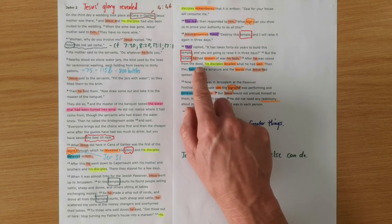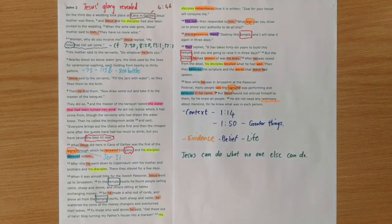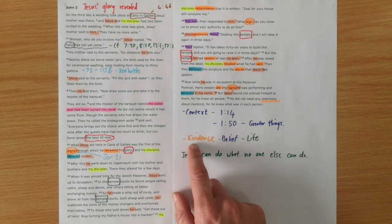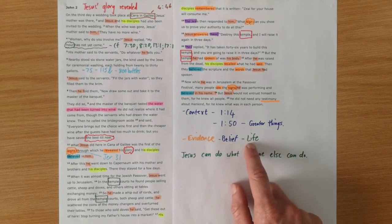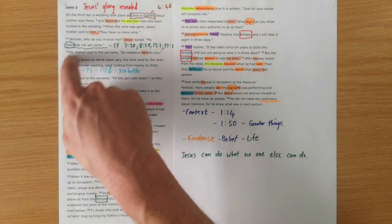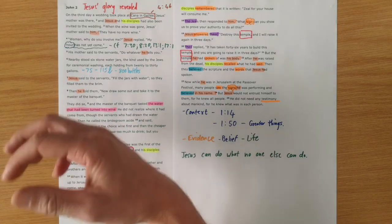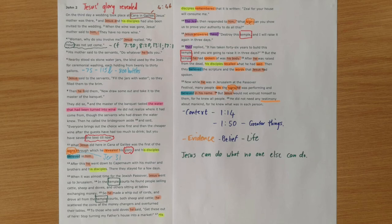And so after he was raised from the dead, his disciples recalled what he had said. They believed the scripture and the words that Jesus had spoken. They remembered the evidence. They believed that evidence that was all about Jesus. And they received the life that comes through Jesus. And this big story is showing us that Jesus' glory is revealed in that he came to do what no one else can do. He came to turn this water into wine as a sign that the new covenant was breaking in. He came to clear the temple to show that this temple was not going to be the place where sins would be dealt with for very much longer.